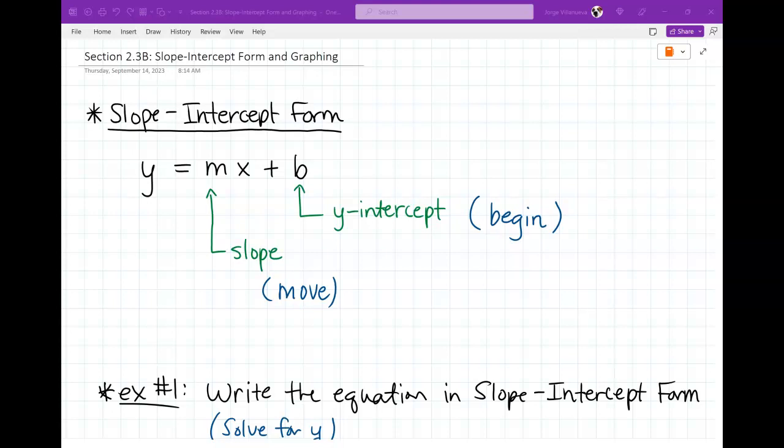You guys should have already written this out. The slope intercept form is y equals mx plus b. The letter m is for slope. The letter b is for y-intercept.